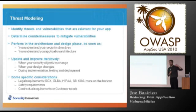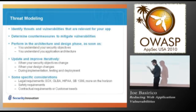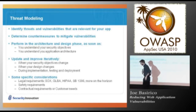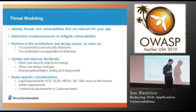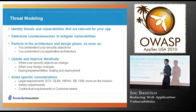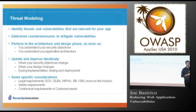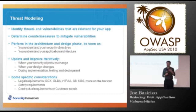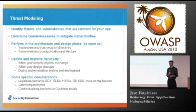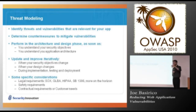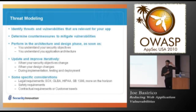SB 1386 is a California Senate Bill now law. Essentially, if you have a data breach, you have to notify every California resident whose data may have been exposed — if the data is not encrypted and you have reason to believe the attacker could have accessed it. The interesting part: you don't have to know if they're California residents. So if someone has a New York, Nevada, or Washington mailing address and they might be a California resident, you still have to notify them or be out of compliance.